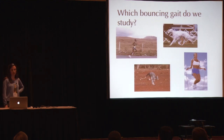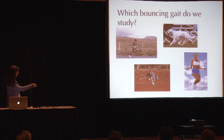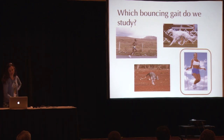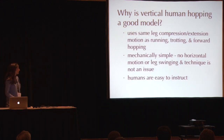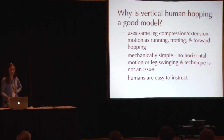Which bouncing gait do we study if we're interested in getting a general cost function for bouncing gaits? We could study running, trotting, hopping forward, or — I chose to study hopping up and down: vertical human hopping. Why is vertical human hopping a good model for bouncing gaits in general? It uses the same basic leg compression-extension motion as in running, trotting, and forward hopping, but it's mechanically simple. There's no horizontal motion or leg swinging to complicate things, and technique is not an issue. Basically, humans are easy to instruct.